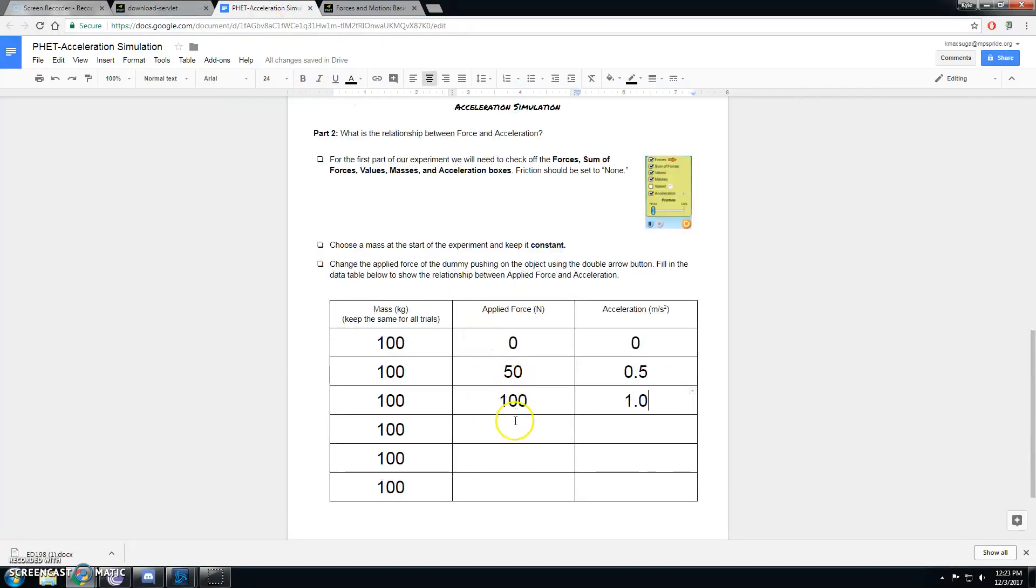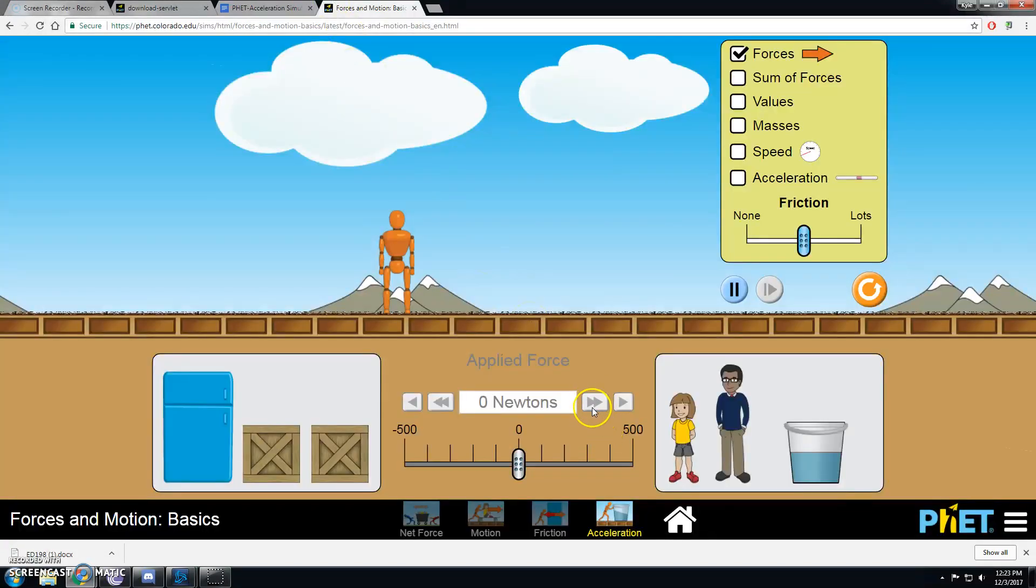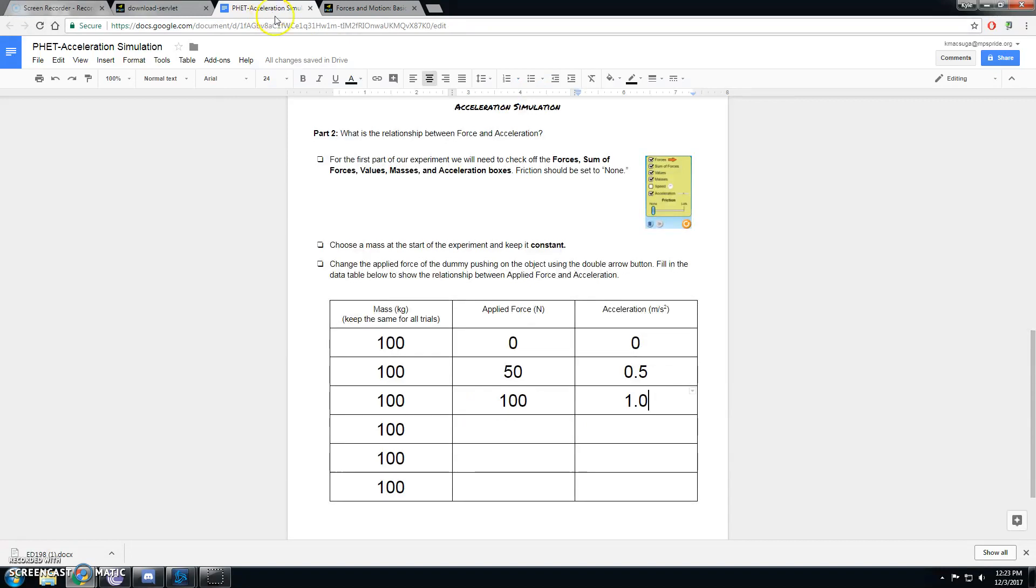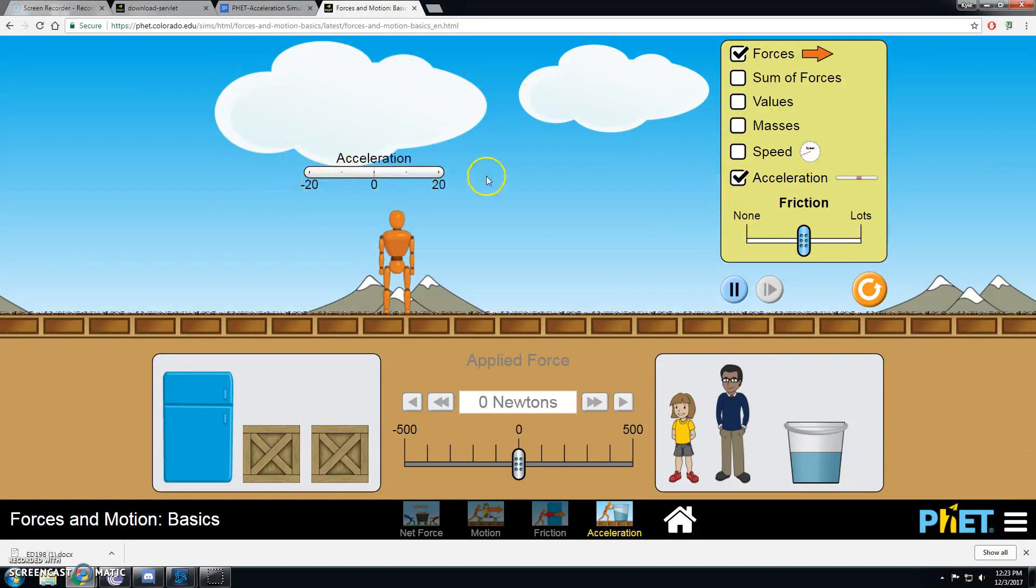And the forces, you can change those on your own as well. I just went by 50 because that's the easiest way to increase it using this tool right here. But every time for recording acceleration, you should be looking at the acceleration meter and writing the number that appears right up in this area right here.